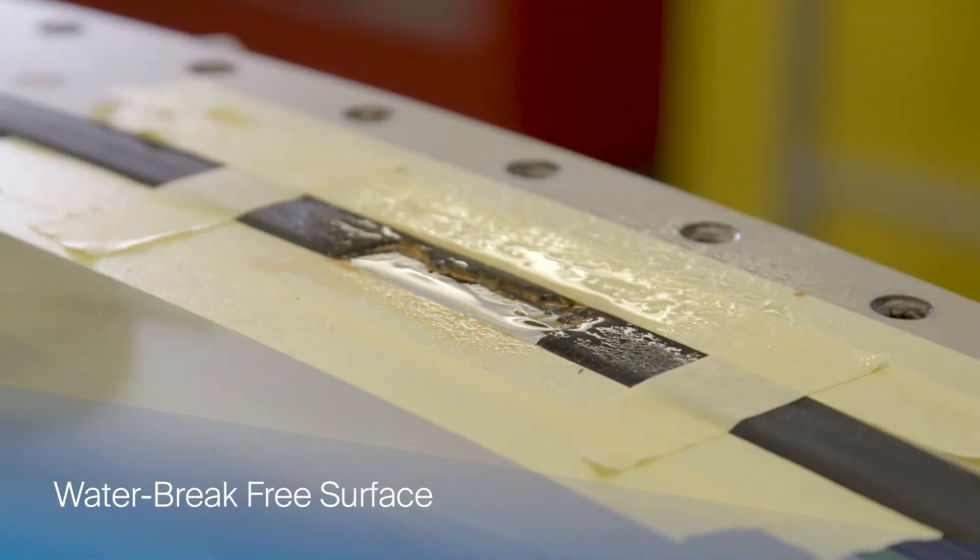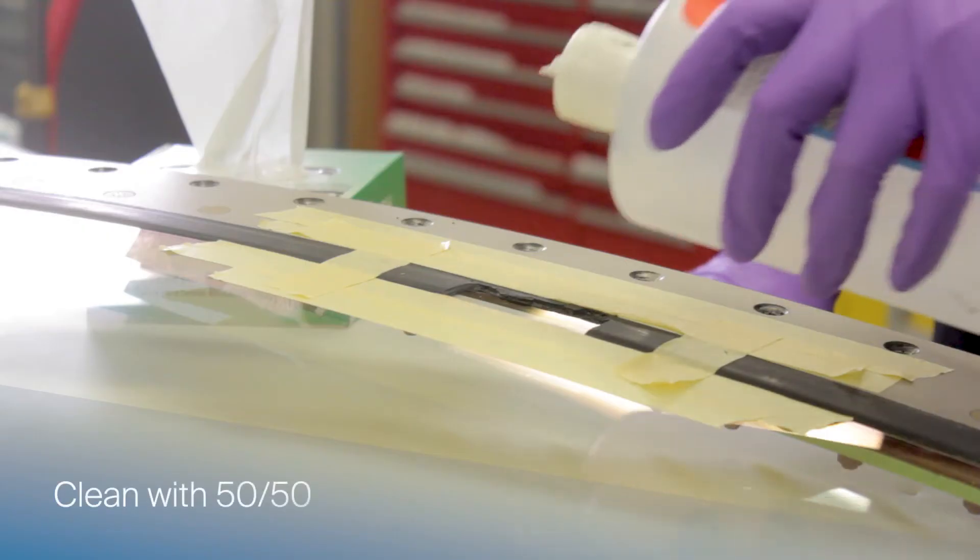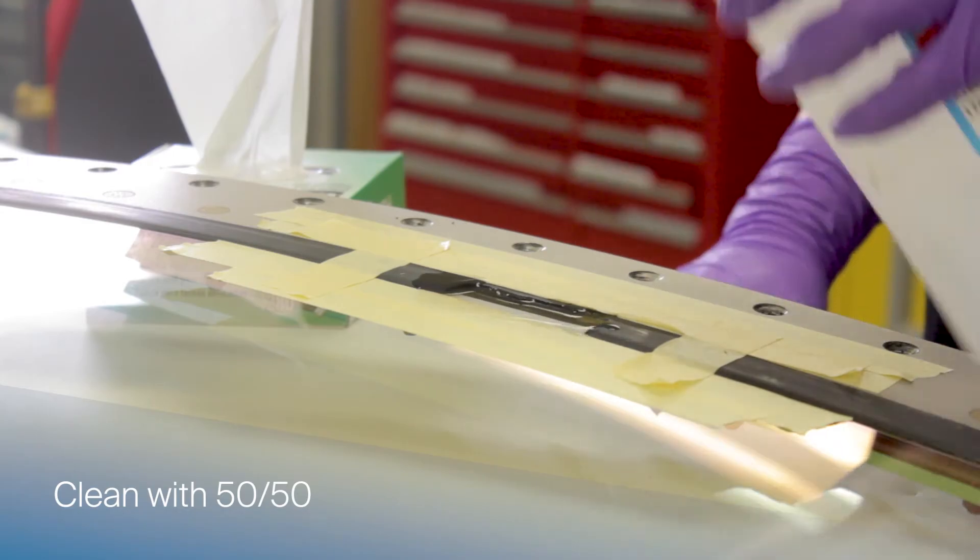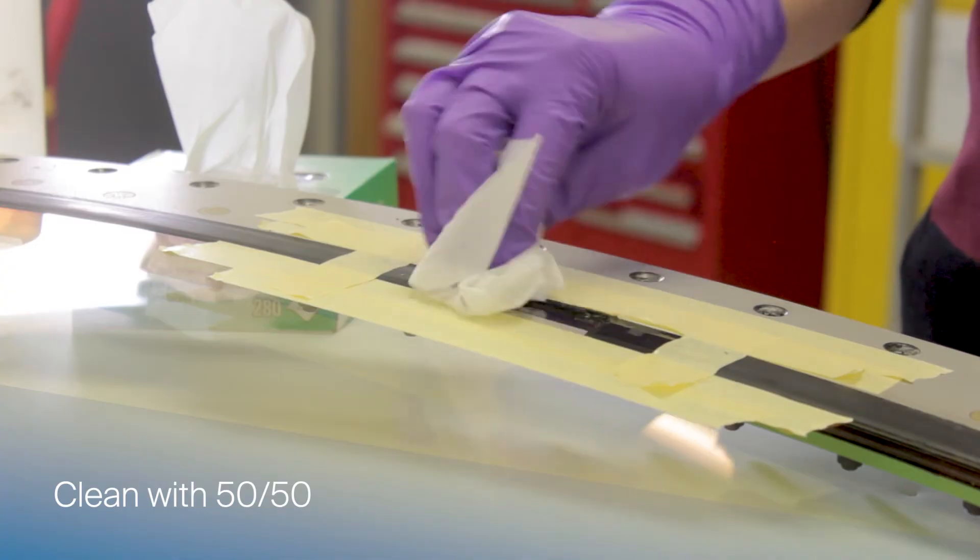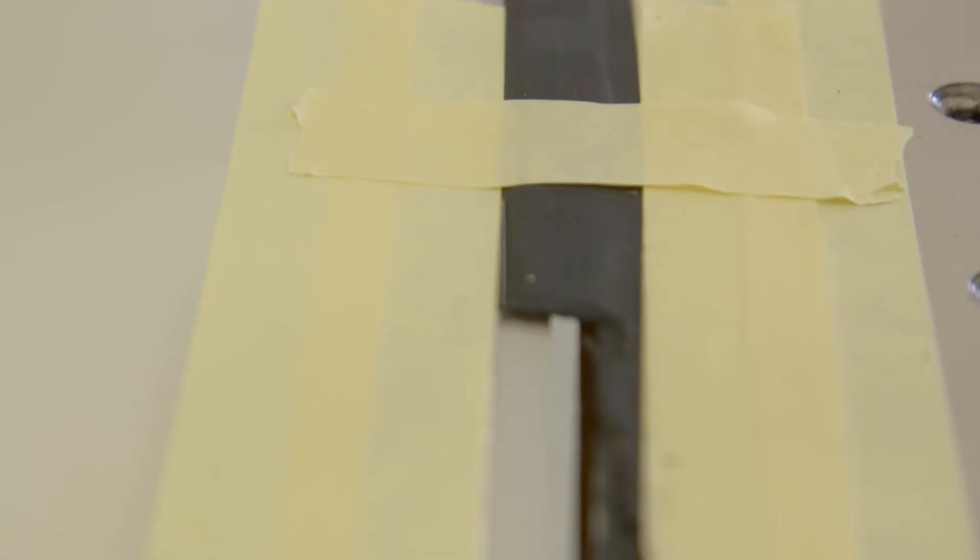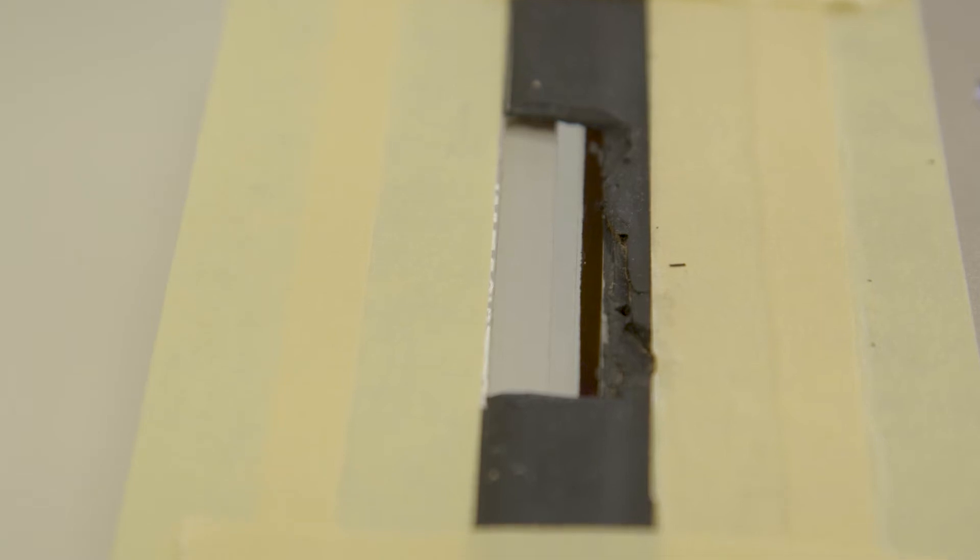After a water break-free surface is obtained, clean the entire area with a solution of 50% isopropyl alcohol and 50% distilled water, and wipe dry with a kimwipe. Exercise care not to touch or contaminate the previously cleaned work area.